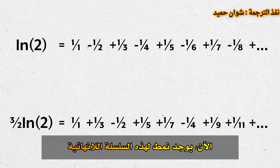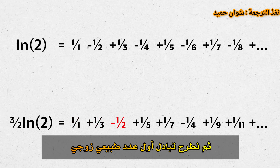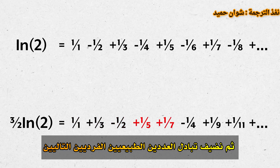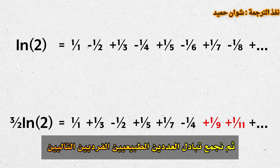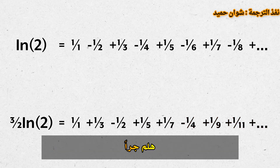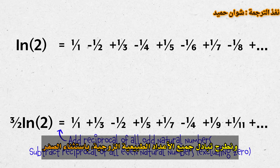Now, there is a pattern to this infinite series. We're adding the reciprocal of the first two odd natural numbers, then subtracting the reciprocal of the first even natural number, then adding the reciprocal of the next two odd natural numbers, then subtracting the reciprocal of the next even natural number, and so on. In the complete infinite series, we add the reciprocal of all odd natural numbers and subtract the reciprocal of all even natural numbers, aside from 0.